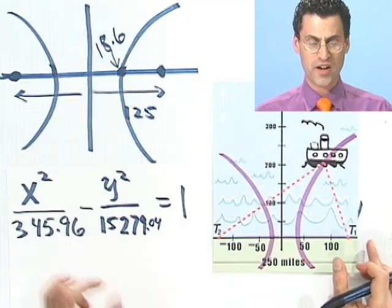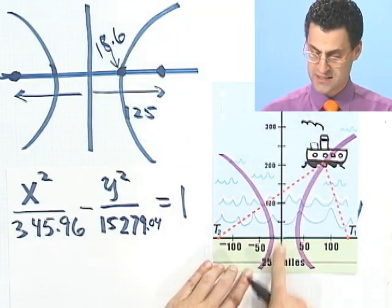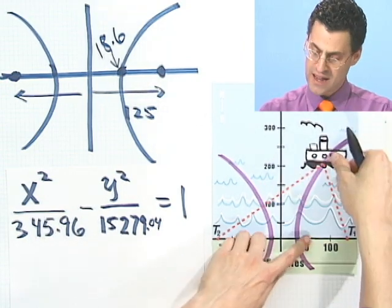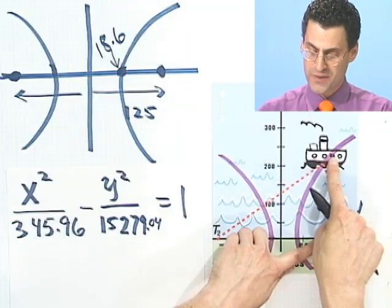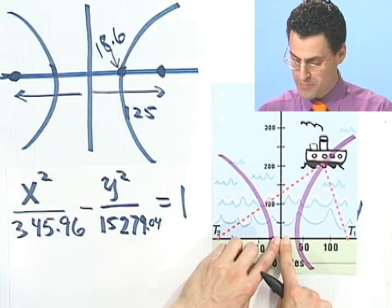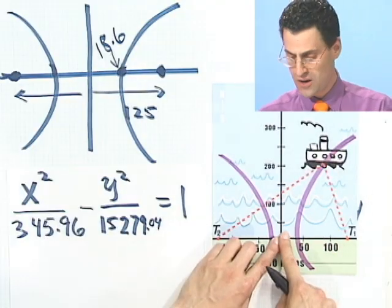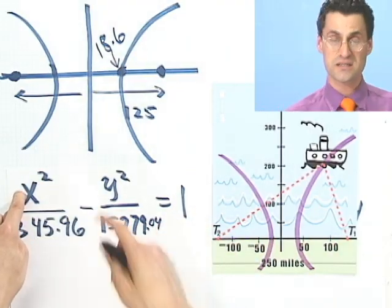Let me ask a follow-up question. Suppose the ship is 100 miles east of the y-axis, so 100 miles this way. Can you tell me how far offshore the boat is? If I know the x-value is 100, can I find y? Sure. I can plug in 100 for x and solve for y.